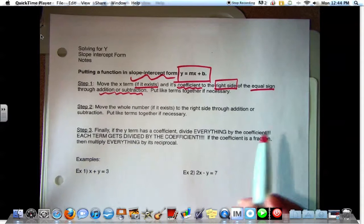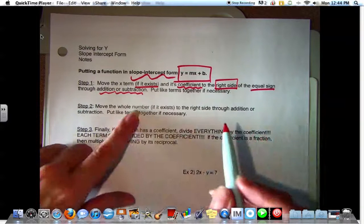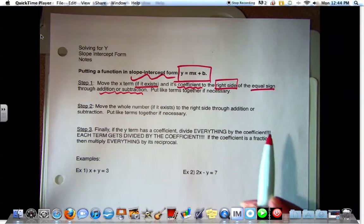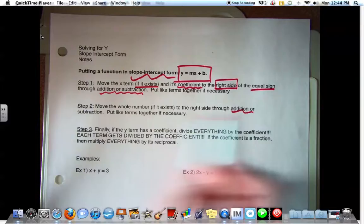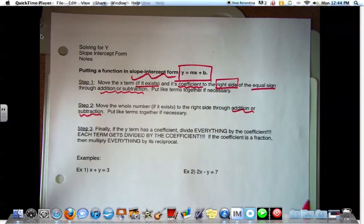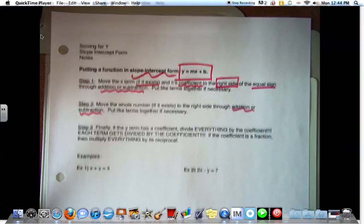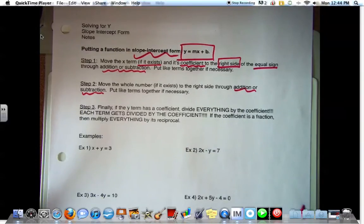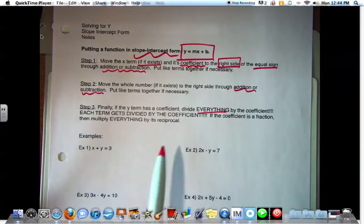Step two, move the whole number or constant, if it exists, to the right side through addition or subtraction. Put like terms together if necessary. Step three, finally, if the Y term has a coefficient, divide everything by the coefficient. Each term gets divided by the coefficient. If the coefficient is a fraction, then multiply everything by its reciprocal.